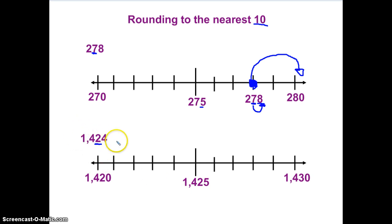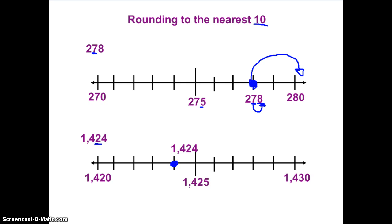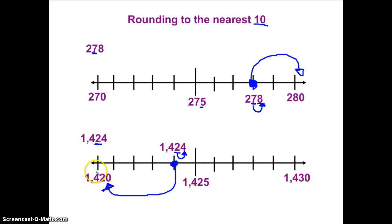Where is 1,424 on the number line? Right here — 1,420, 421, 422, 423, 424. 1,424 is right here on my number line. I'm ready to round. I'm rounding to the tens place, so I'm going to look right next door to the neighbor. My neighbor is the ones place, and I have a four in the neighbor spot. Is it five or more or four or less? The neighbor is four or less, which means I'm going to round 1,424 down — let it rest. So 1,424 rounds to 1,420.